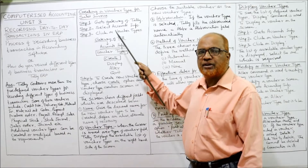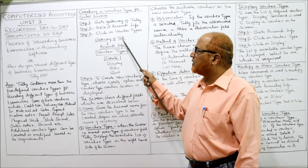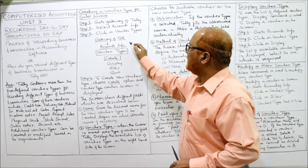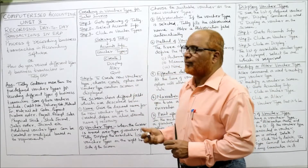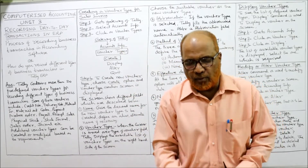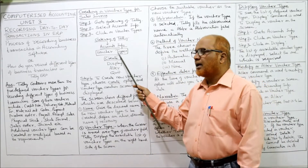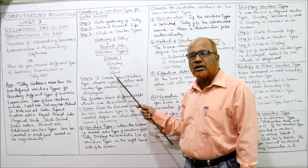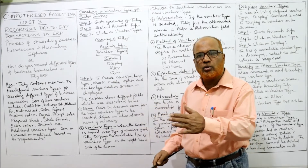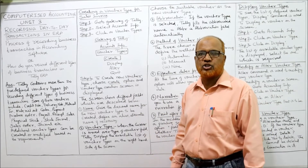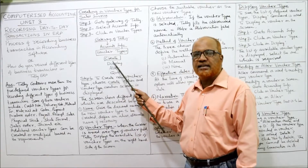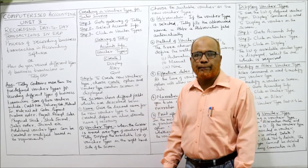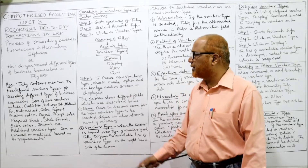This is the screen you will get. From the Gateway of Tally, select Account Info; under Account Info select Voucher Type. Under Voucher Type, options are given: Create, Display, Alter, or Quit. Quit means you exit this page. Since we want to create a voucher type, select Create.